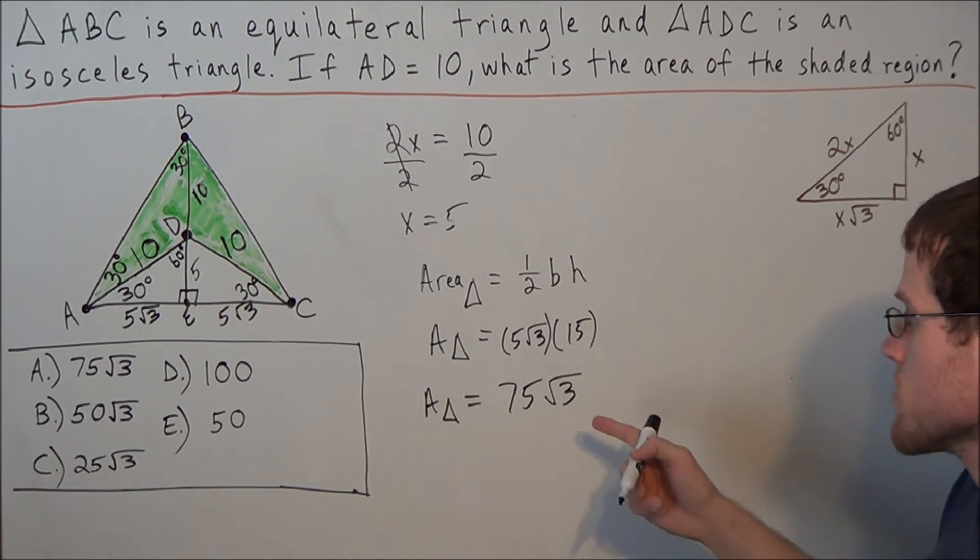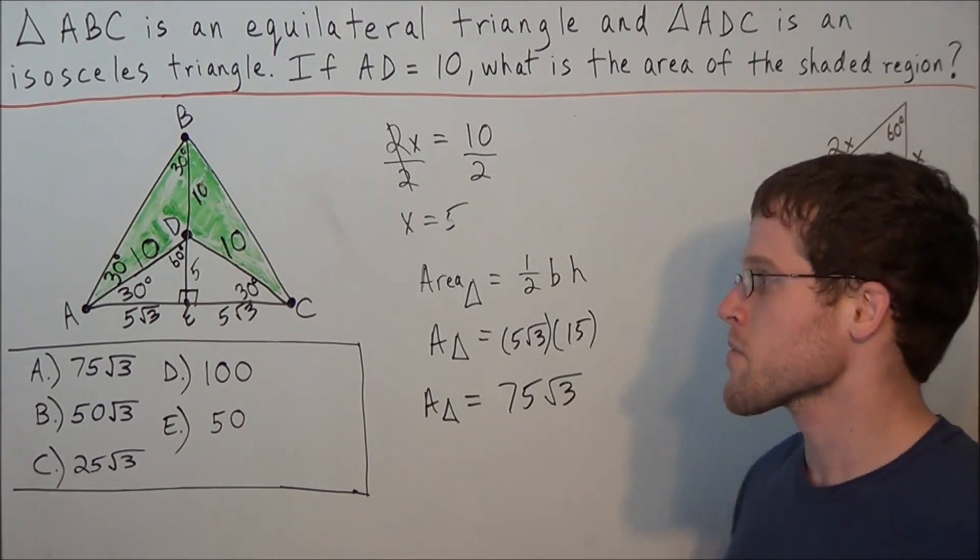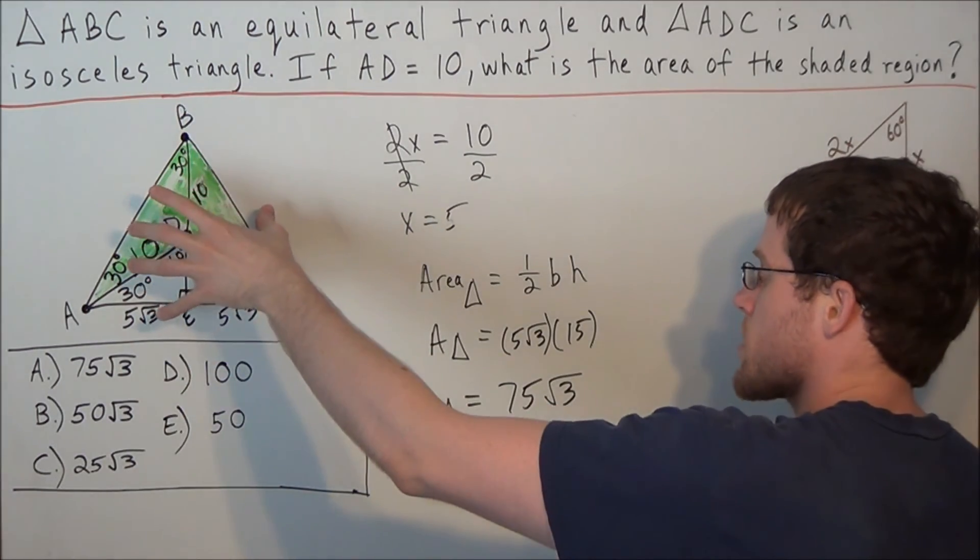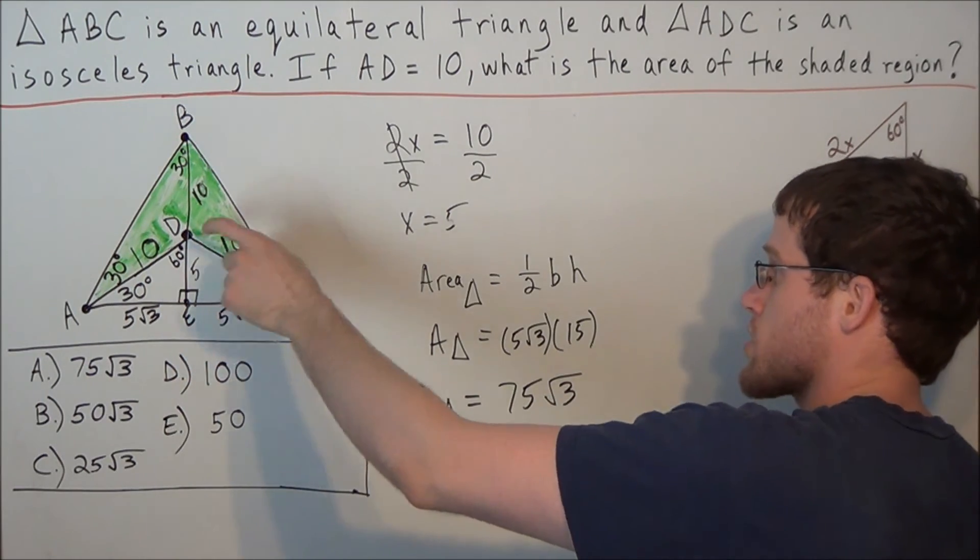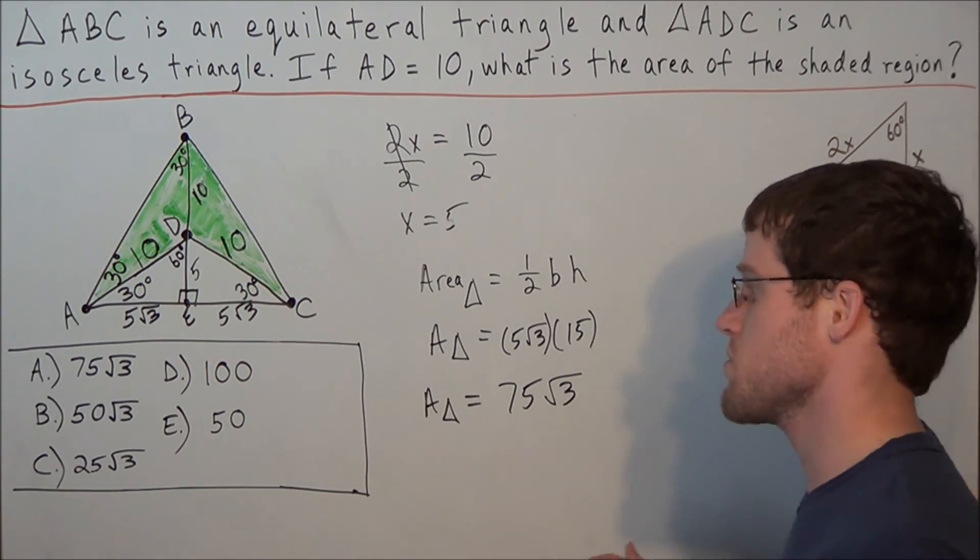But this isn't our answer. It's tempting to circle choice A. But remember, we're subtracting the area of the big triangle and the area of the small triangle. Because that's going to tell us the area of the shaded region.